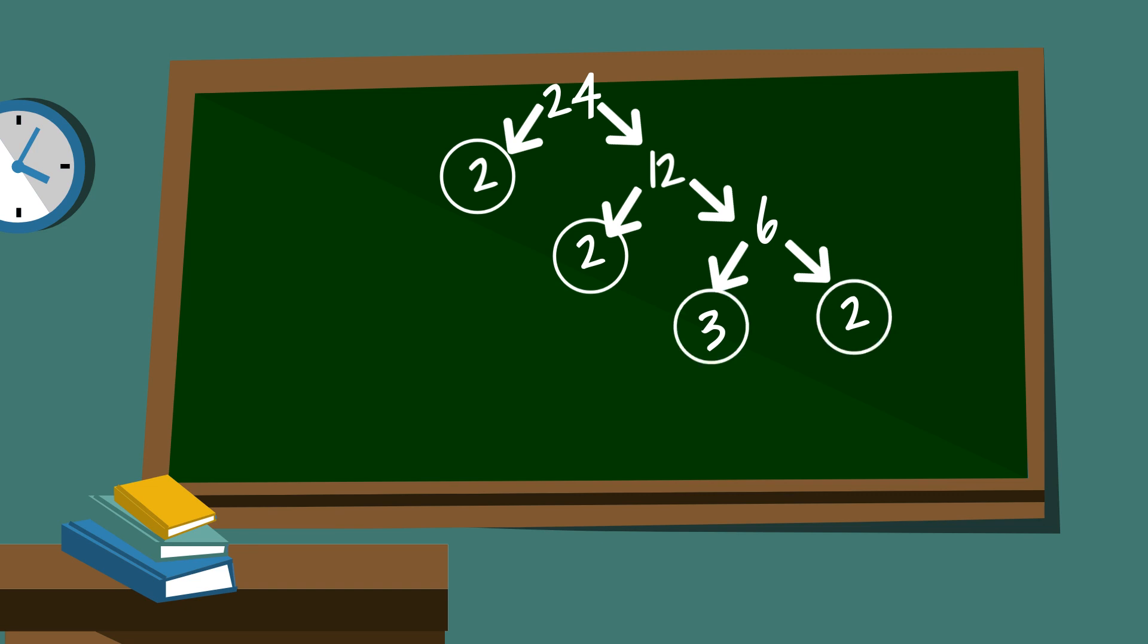They are both prime so I will circle them. So the prime factorization of twenty-four is two times two times two times three. Or you can write it like this.